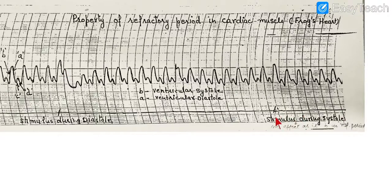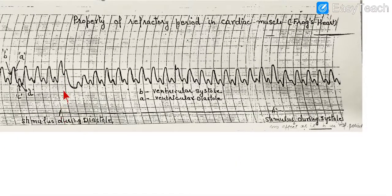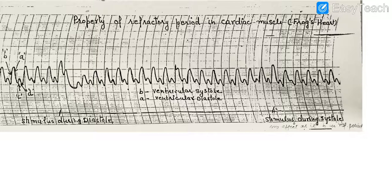To summarize: if you provide a stimulus during systole, no change is seen. If you provide it during late diastole with a strong enough stimulus, it results in an extra systole. Possible exam questions include: define refractive period, types of refractive period, how it differs in cardiac vs skeletal muscle, the reason for absolute refractive period, its normal duration, and whether it is beneficial. It is beneficial because cardiac muscle cannot get tetanized like skeletal muscle due to the longer refractive period. Key terms to know: compensatory pause and extra systole.